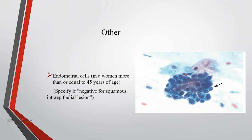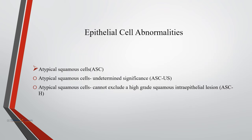The presence of endometrial cells in the reproductive age group is a normal finding in cervical cytology specimens, but endometrial cells present in a woman aged 45 years or older are considered abnormal. We must specify if it is negative for squamous intraepithelial lesion. Let us now discuss some epithelial cell abnormalities.